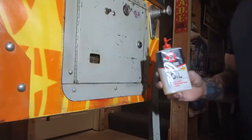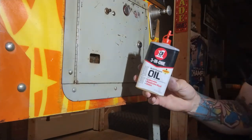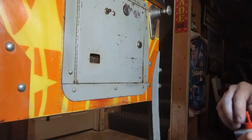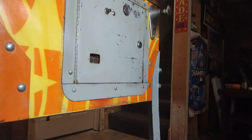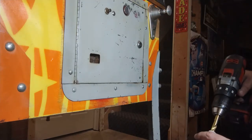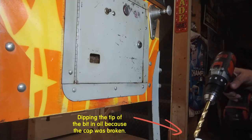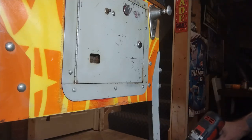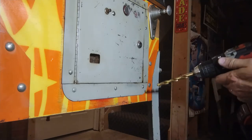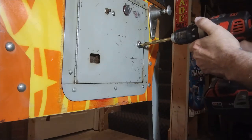Use some three-in-one oil or even a little bit of WD-40. It's not to protect the lock obviously, we don't care about that because we're drilling it. Put a couple drops on there, and then we're going to go straight in.